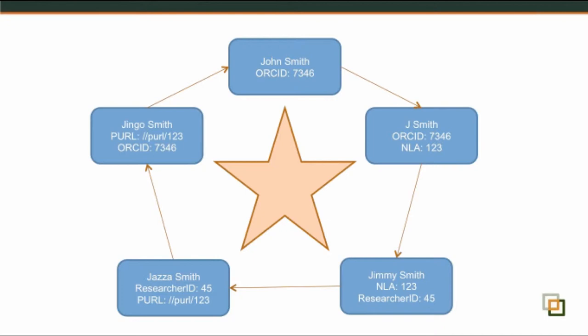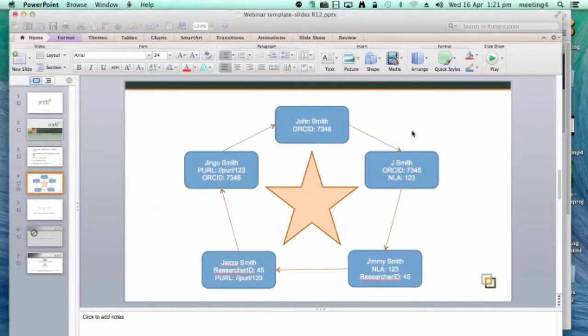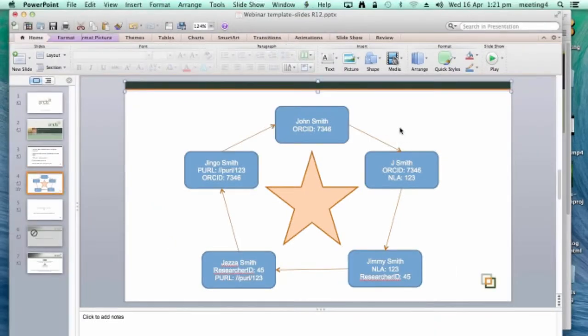The linking of records in Research Data Australia happens for all class types. The example on screen is for parties, but the linking across identifiers will happen for all four class types: parties, services, activities, and collections. So let me just flick over to Research Data Australia to show what this looks like.